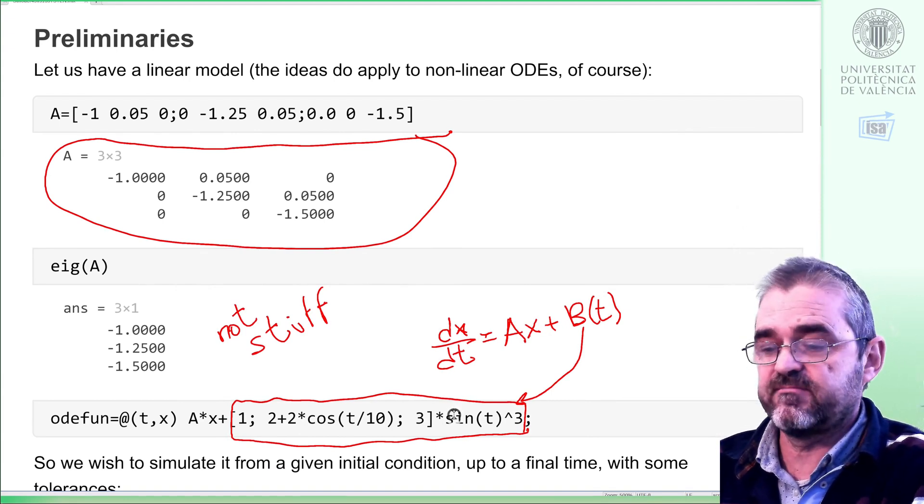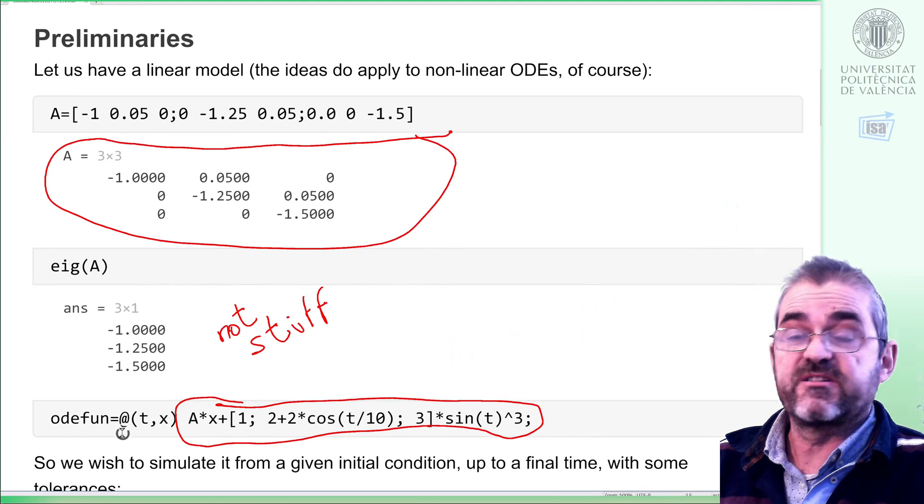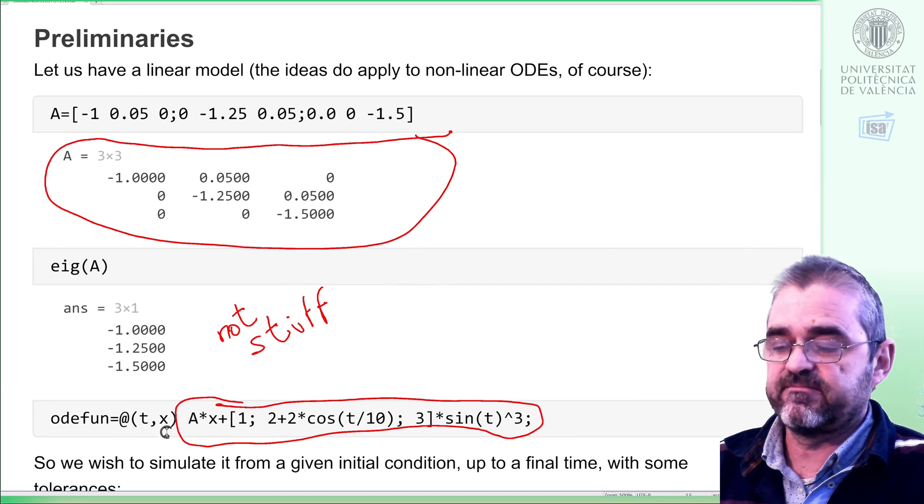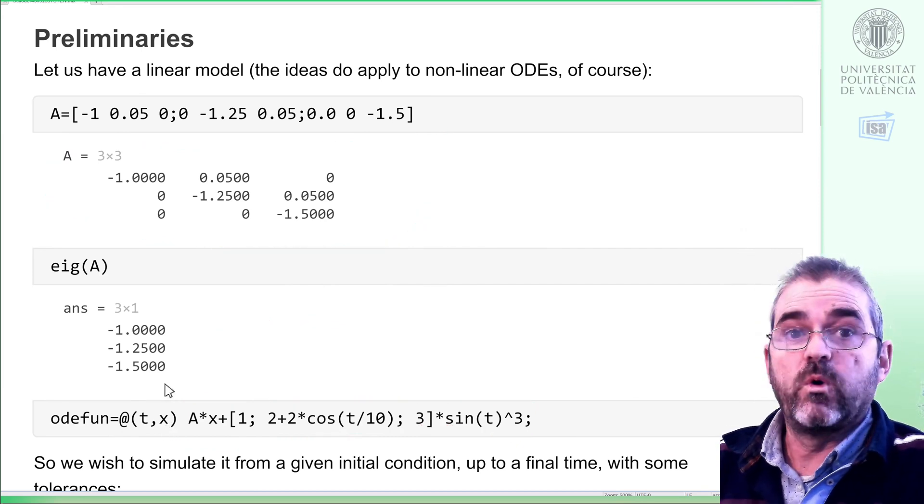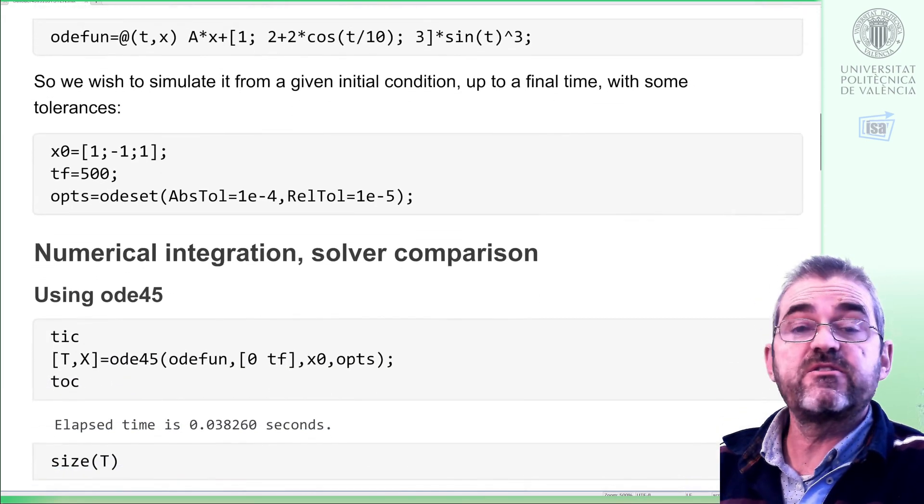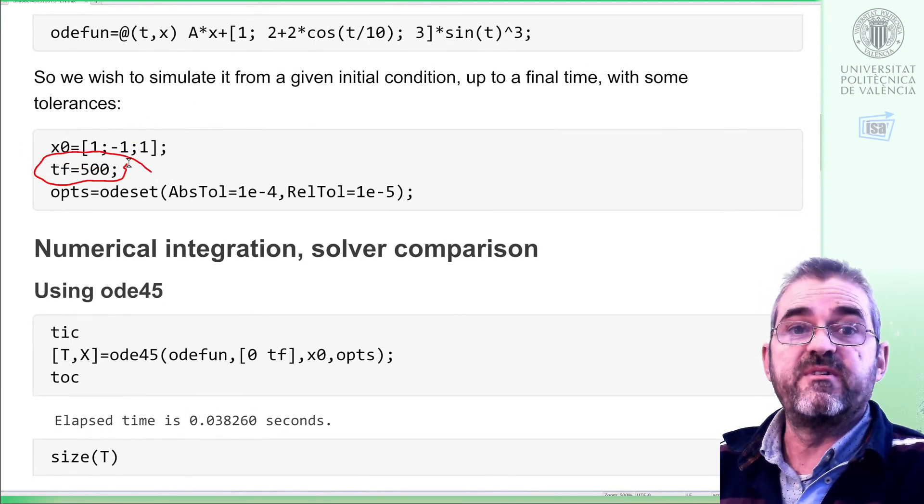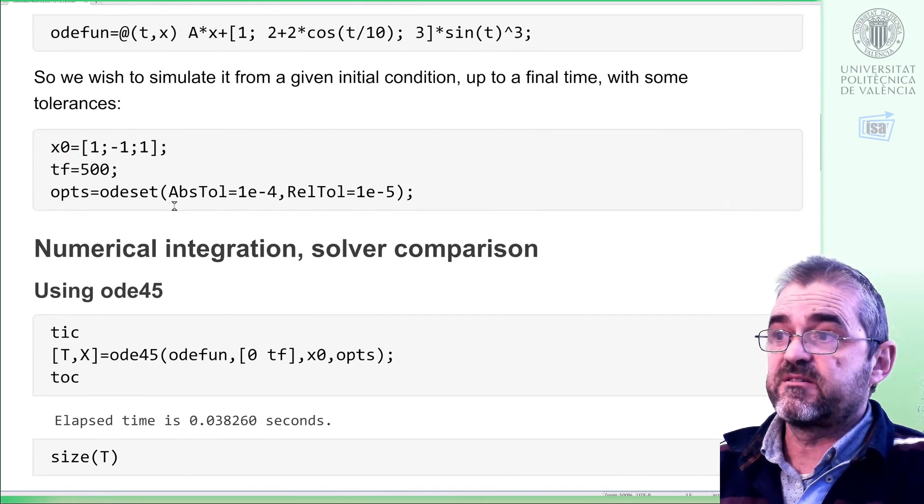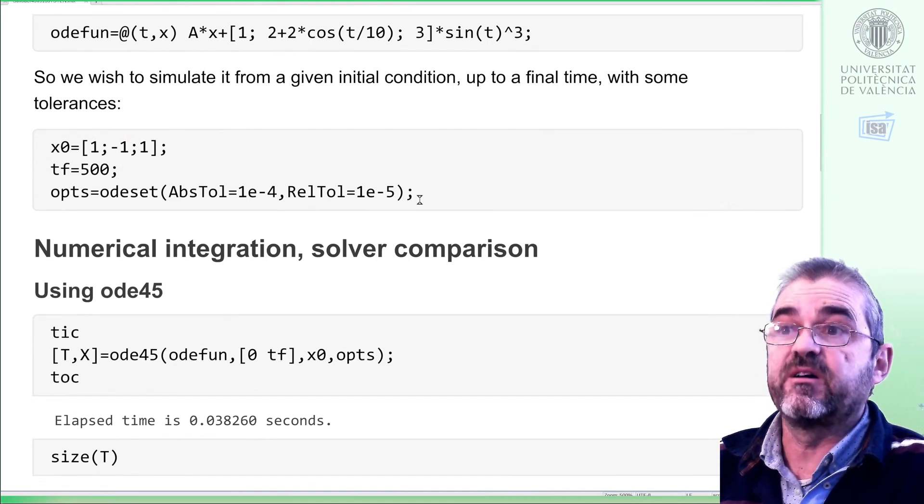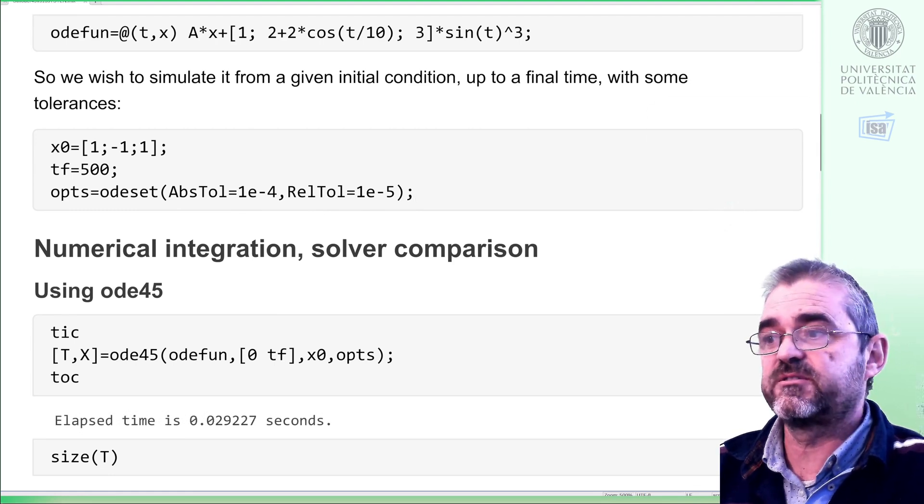So we will simulate that and this will be the model expressed in MATLAB code as the differential equation solvers need it. The time and state vector will be the arguments. So this will be the easy problem. All poles are similar and we wish to simulate it from a given initial condition up to a final time. This will be the initial condition and this will be the final time. We will set some tolerance limits. Of course, the smaller the tolerances, the longer it will take to simulate.